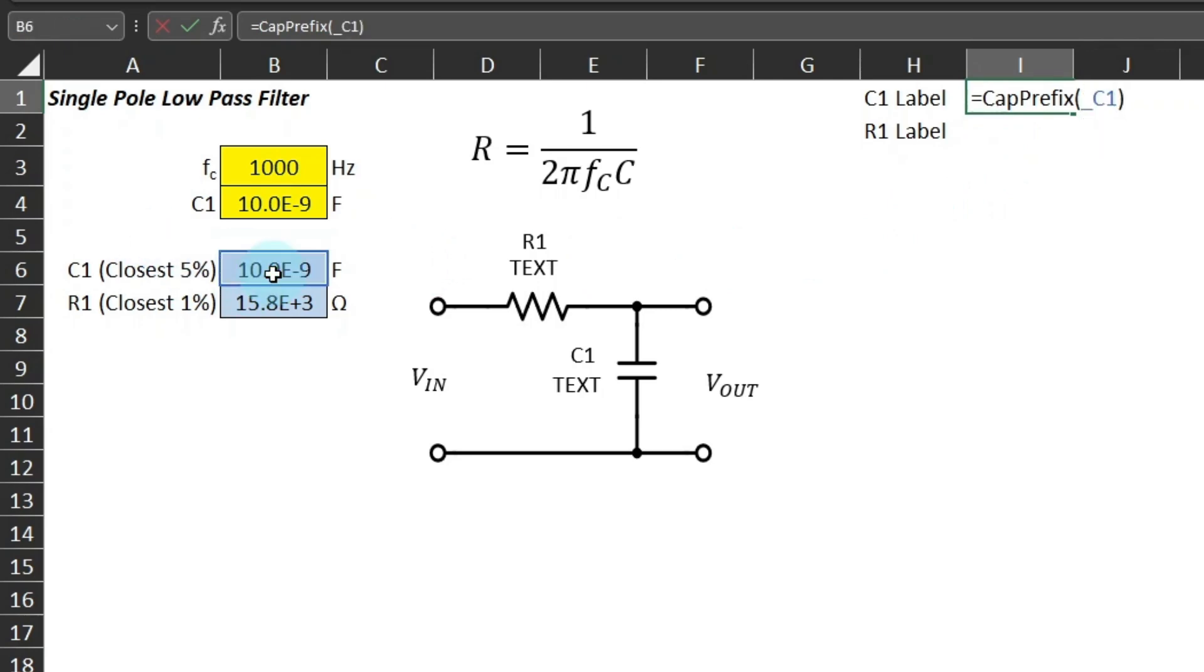For R1, I will use the previously used engineering prefix function to return the applicable prefix for the value of R1 concatenated with omega.